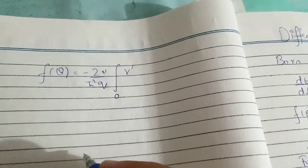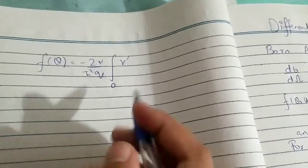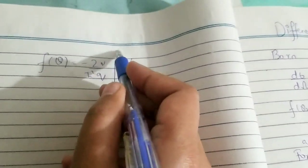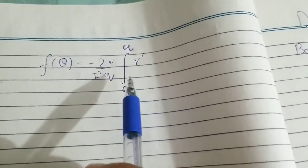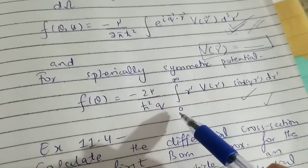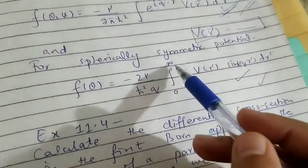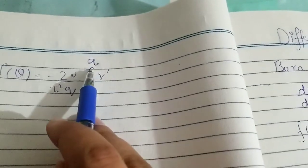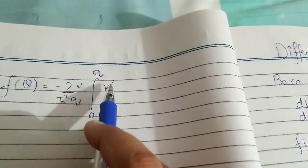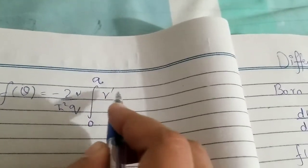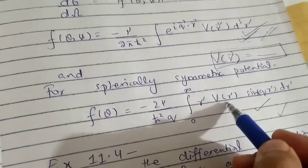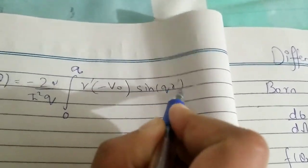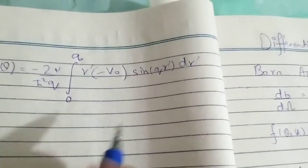Putting the value of the potential and breaking the limits into two parts: for r less than a, the integral runs from zero to a, with V of r prime replaced by minus V-naught, and the sine qr prime term remains as is. For the region a to infinity, the potential is zero in that domain, so that part of the integral becomes zero — only the first part gives a non-zero contribution.